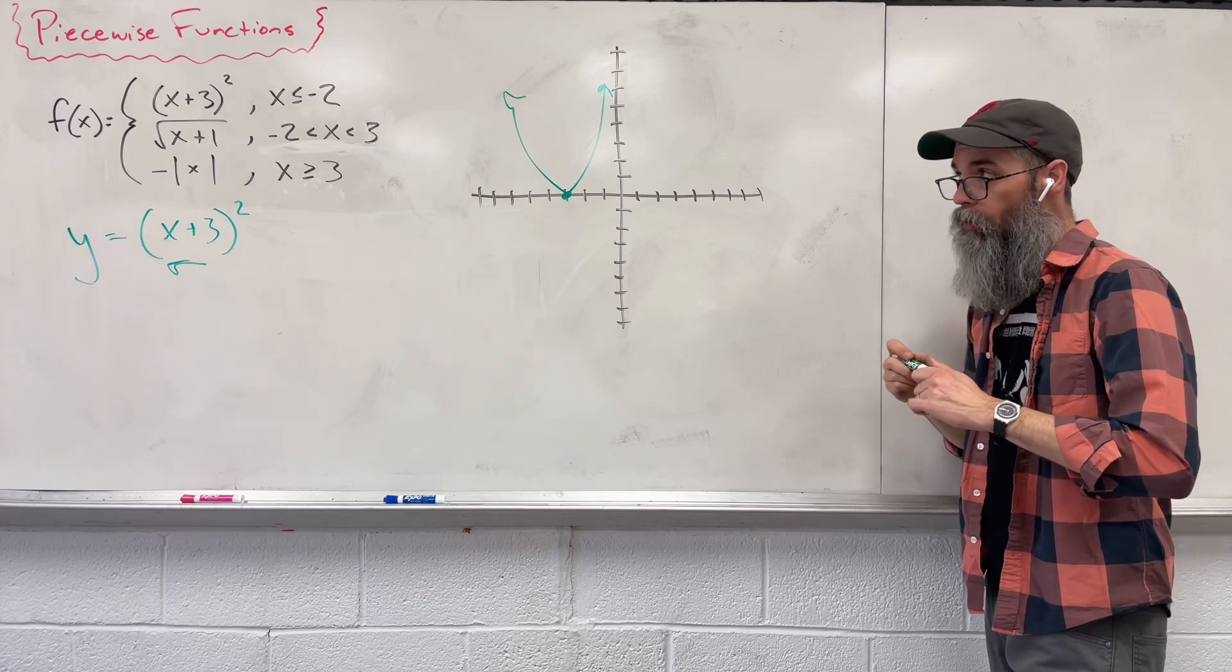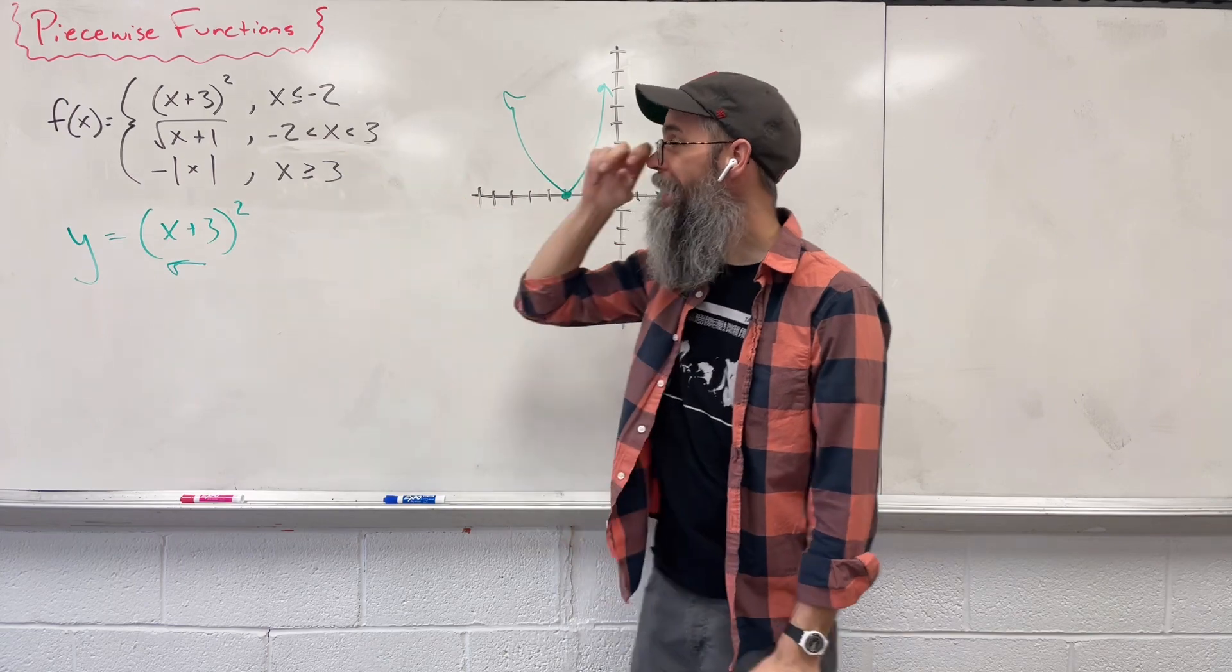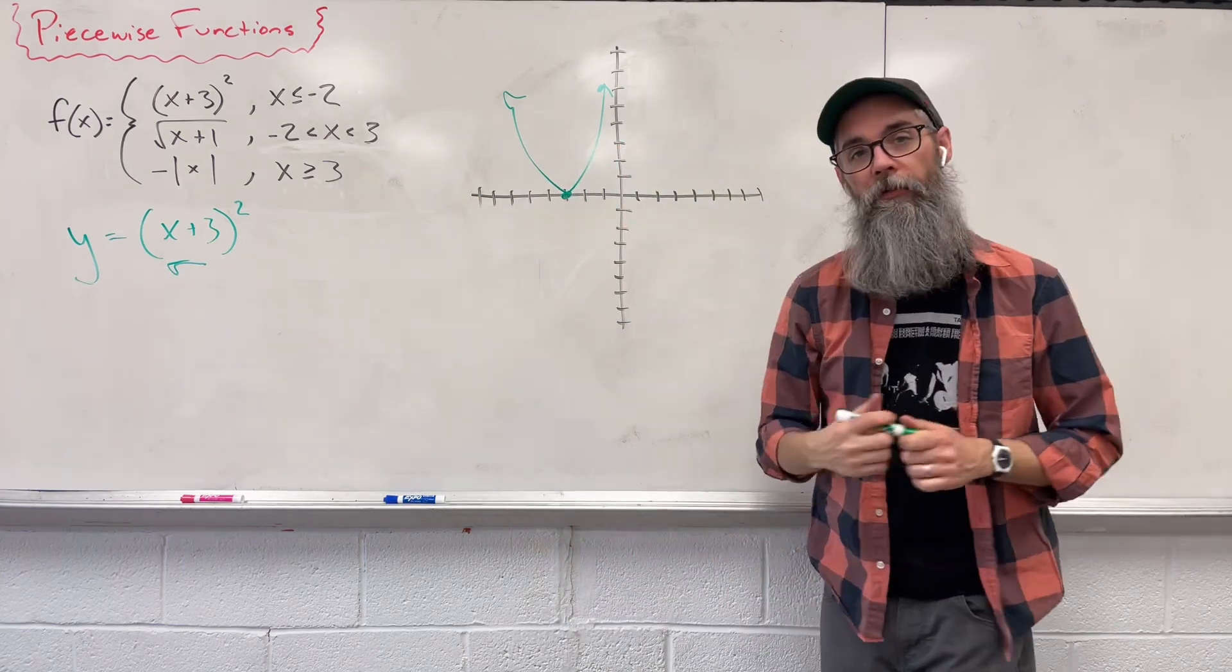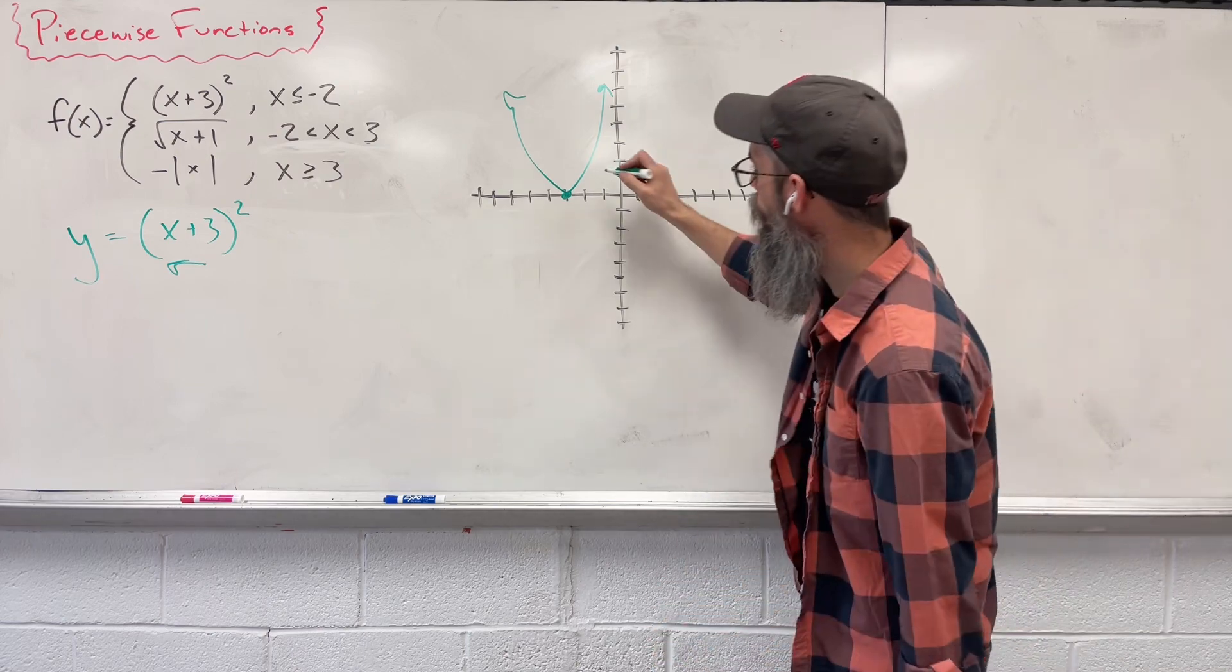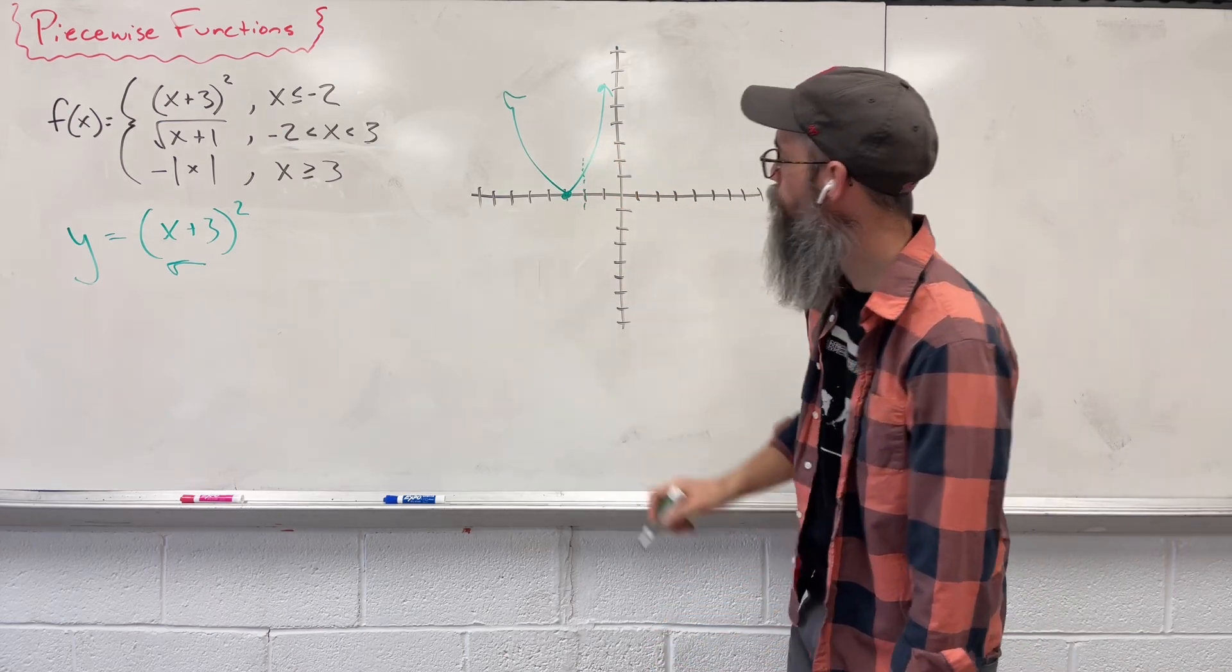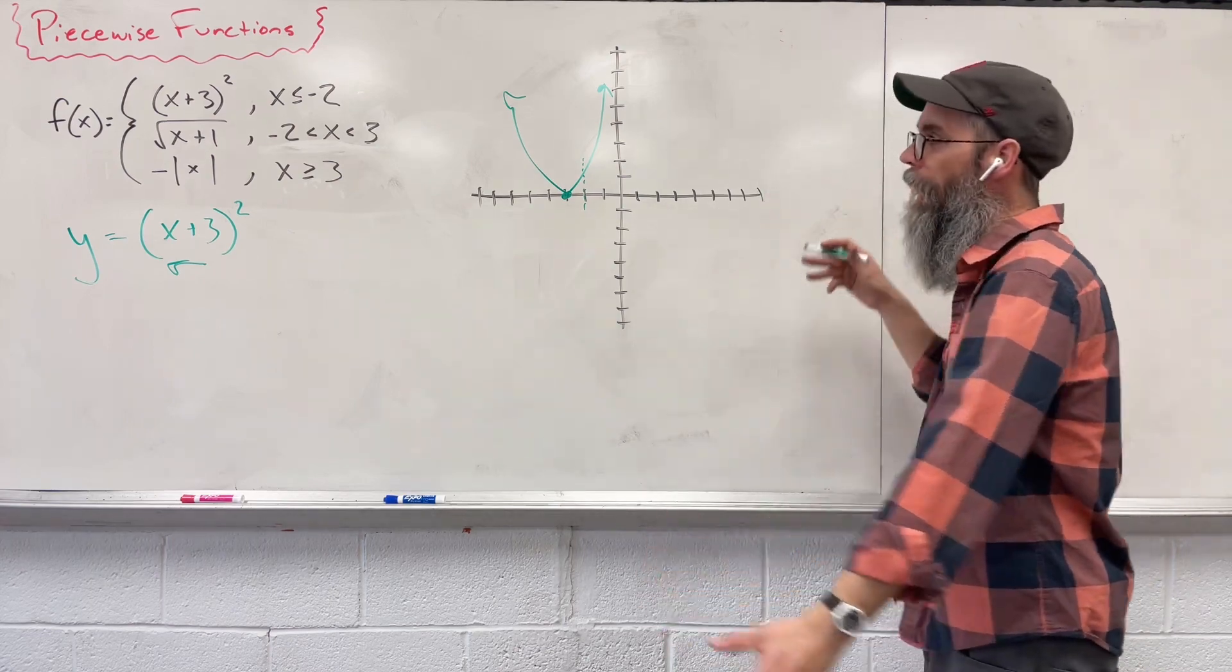Okay, let's keep in mind that we have to follow our constraints now. Our constraints are these things at the end. x is less than or equal to negative 2. First thing I want you to do, we're going to take that negative 2, we're going to draw a wall, a little invisible wall. It's not part of the graph, it's just invisible to help us decide what we're keeping.